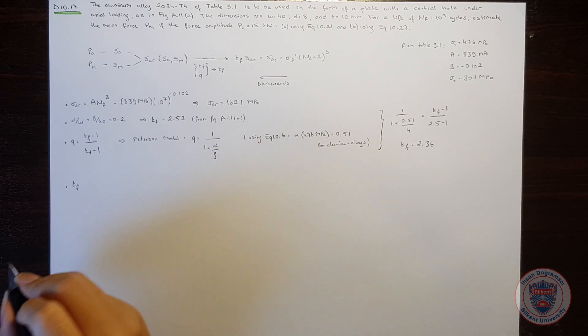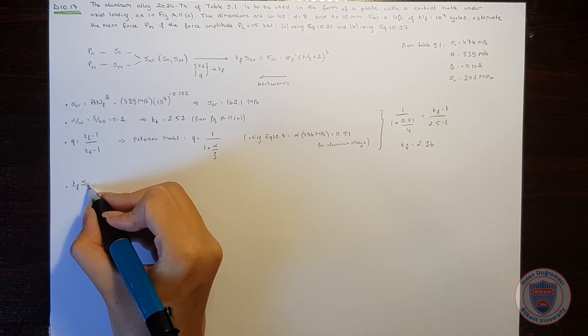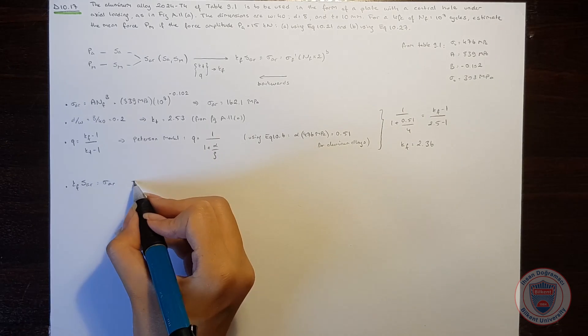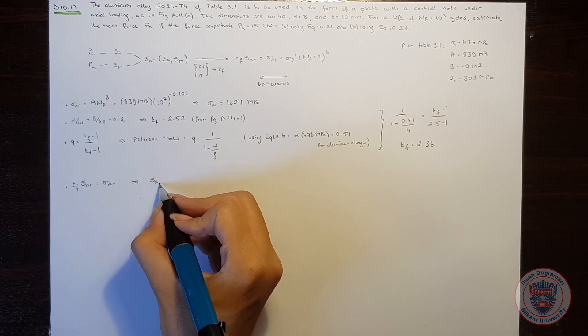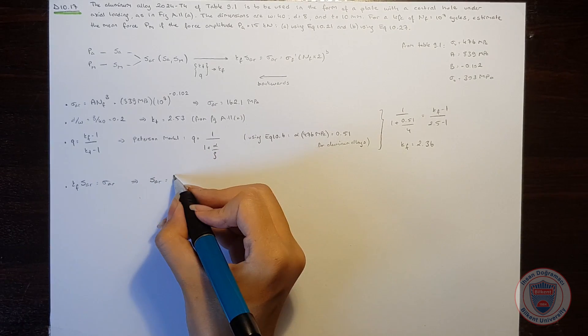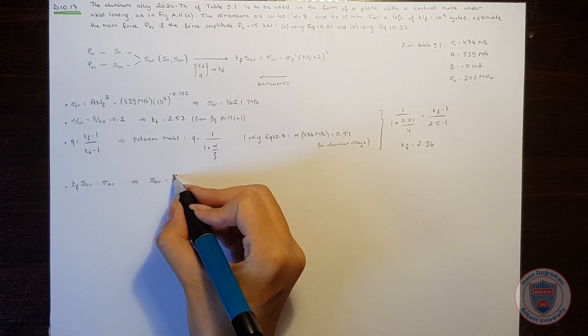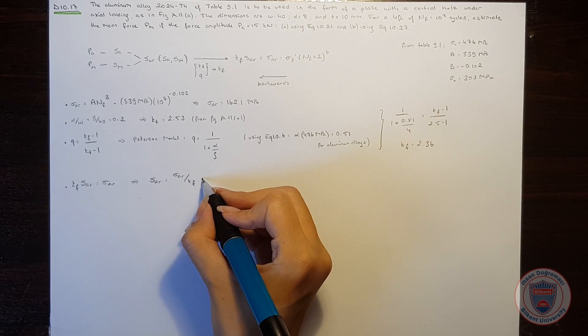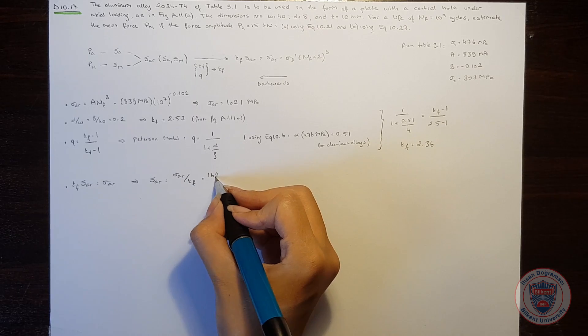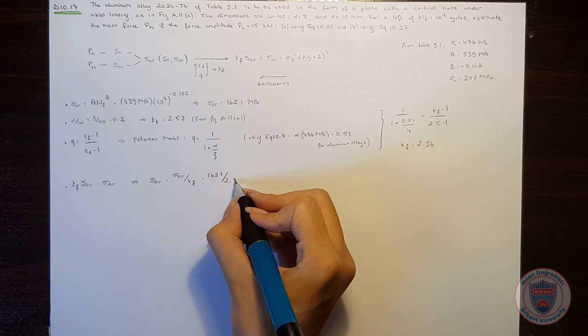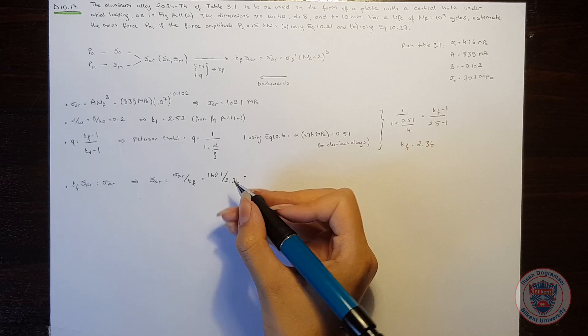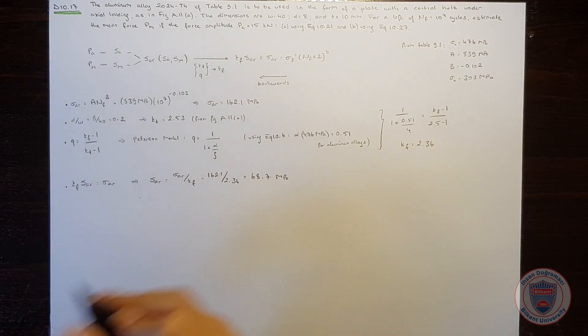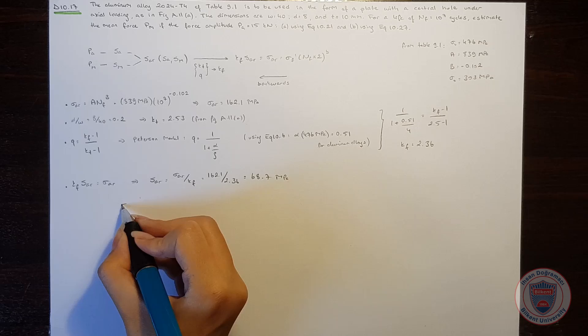Since the fatigue notch factor times SAR is equal to sigma AR, we can say that the SAR will be equal to sigma AR over the fatigue notch factor and it is equal to 162.1 over 2.36 which is equal to 68.7 MPa.